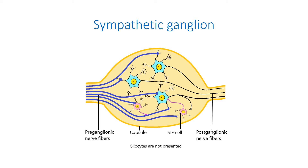Axons of the latter, which are non-myelinated ones, leave the ganglia. Nerve fibers that relay in the ganglia of the sympathetic trunk pass prevertebral ganglia without synapsing, and those which synapse in prevertebral ganglia pass paravertebral ganglia without relaying. The neurotransmitter in the synapses of the sympathetic ganglia is acetylcholine.